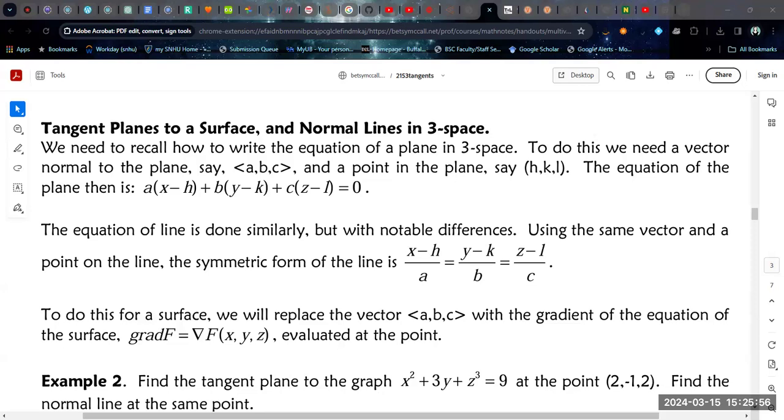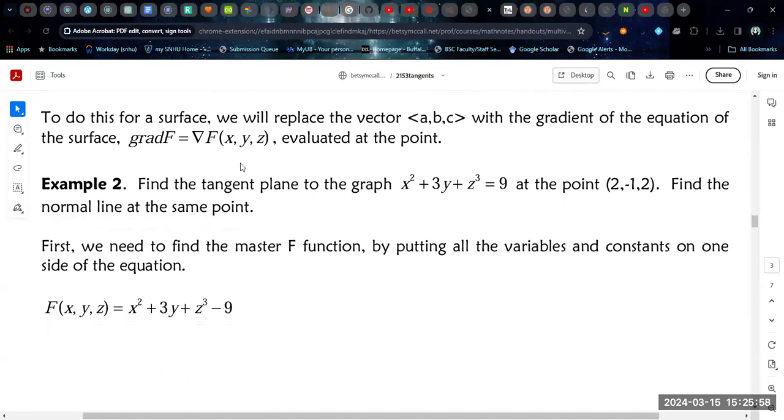All right. So let's go through. Now, to actually calculate the vector that is perpendicular to the surface, we're going to calculate the gradient of not the original function Z, but we're going to put everything on one side of the equation, call that big F, and then we're going to calculate the vector perpendicular to the surface from that big F function.